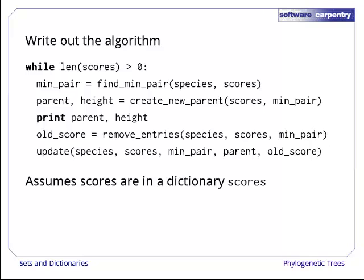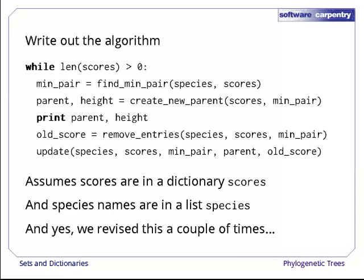This code assumes that the scores are in a dictionary called scores. It also assumes that the names of the species are in a list called species. And yes, it took us a couple of false starts to come up with this code. We would have shown you the blind alleys, but this episode is already rather long.